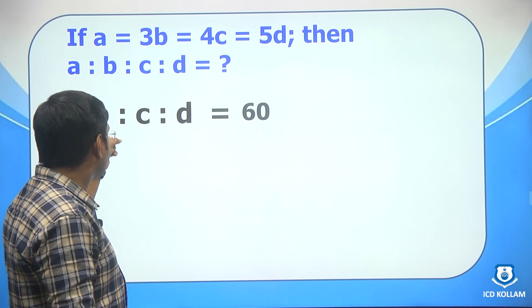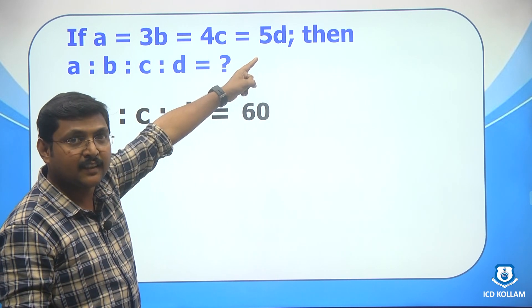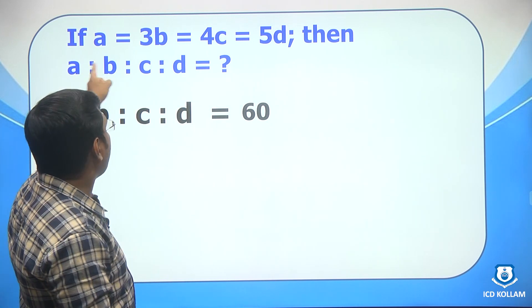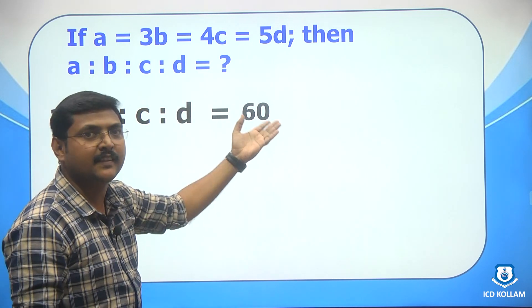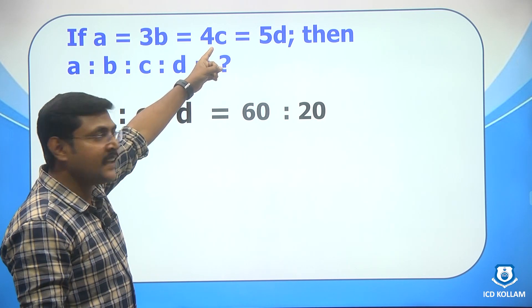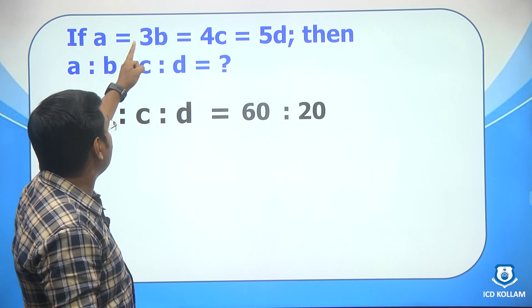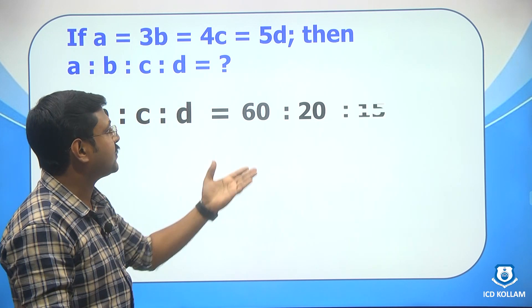Next to find b, yes, to find b it is a, c and d, we need to consider the coefficient of a, c and d right. So 1 into 4, 4, 4 into 5, it is 20. Next we need to consider c. So ignore that c and consider the coefficient of a, b and d. So 1 into 3, 3, 3 into 5 it is 15.